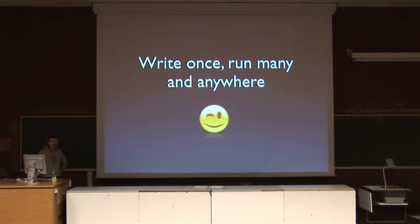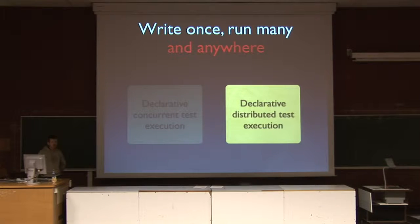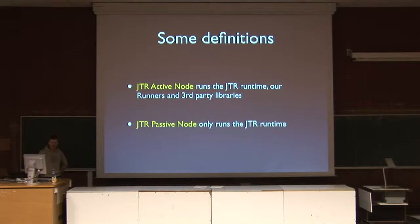We have already seen that we can run tests many times with declarative concurrent test execution and also anywhere. Declarative distributed test execution means that we can actually distribute our tests to a cluster of passive nodes. By simply adding this snippet of XML code to the configuration file, we are stating that we want the test to be distributed to the set of nodes — Freddy, Barney, and Davis, for example.